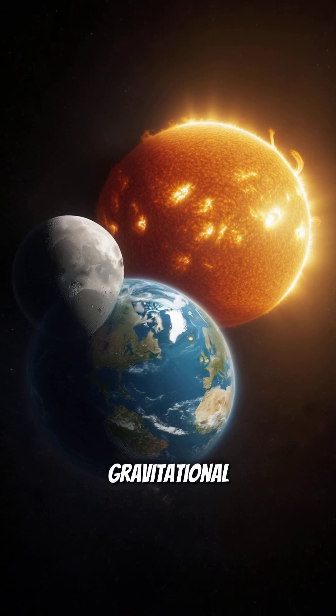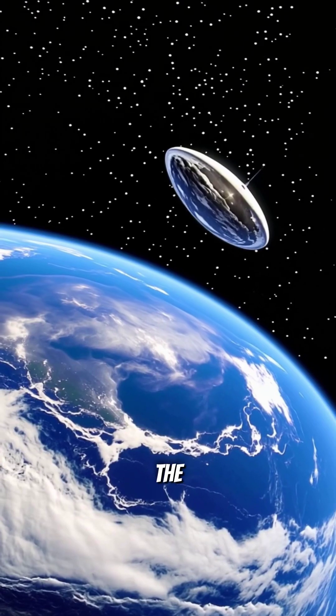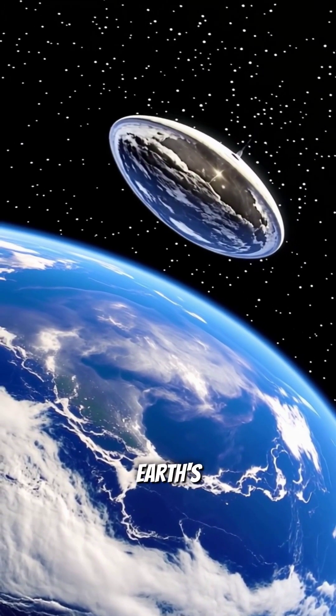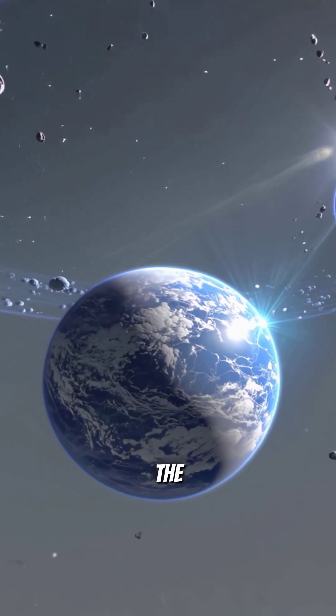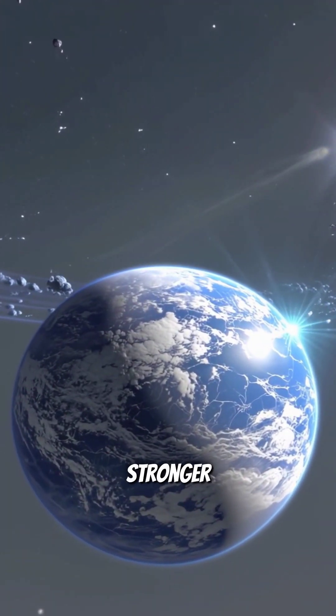Each exerts a gravitational pull on the others. The Moon orbits the Earth due to Earth's gravity. The Earth orbits the Sun because of the Sun's much stronger gravity.